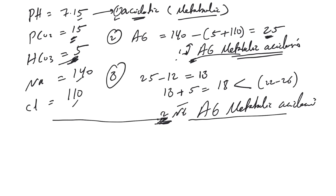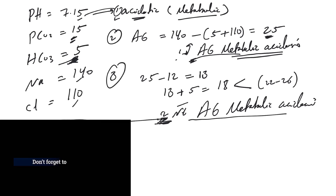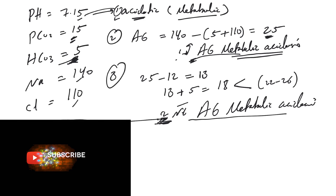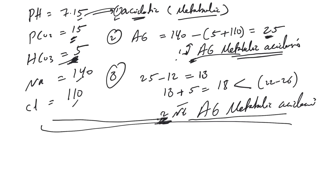Going systematically uncovers and discovers all the possible disorders. Please try every time you see an ABG in the hospital to go systematic until you get used to it — it will make things very straightforward and easy. These are some examples on how to interpret ABGs. I'll see you in the next video.